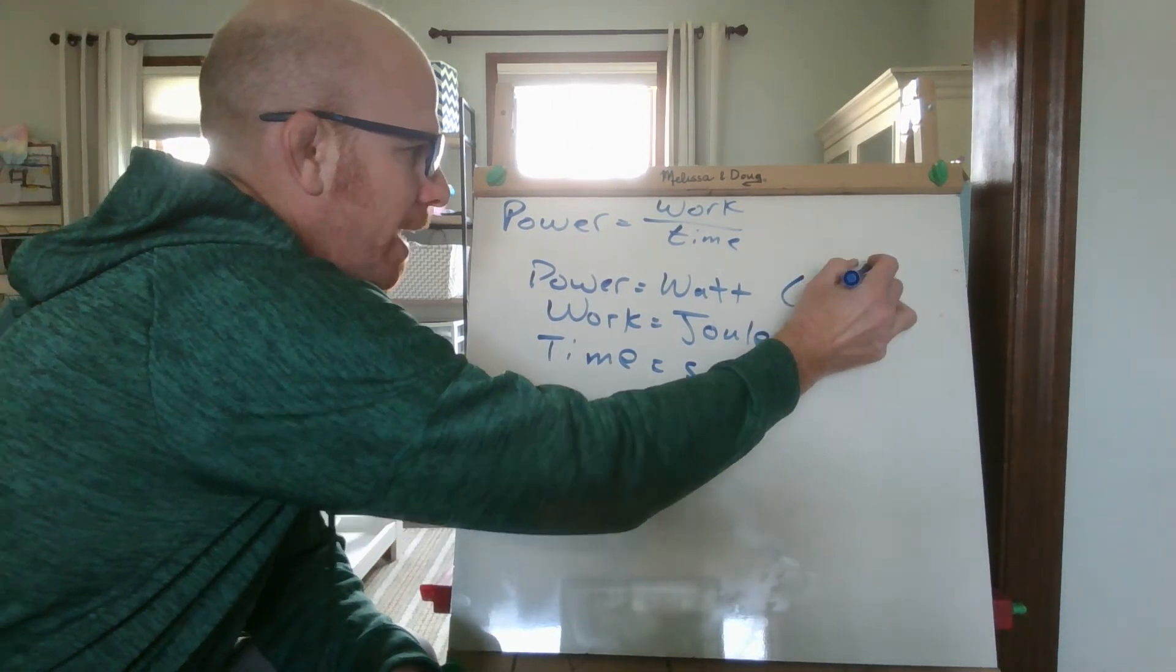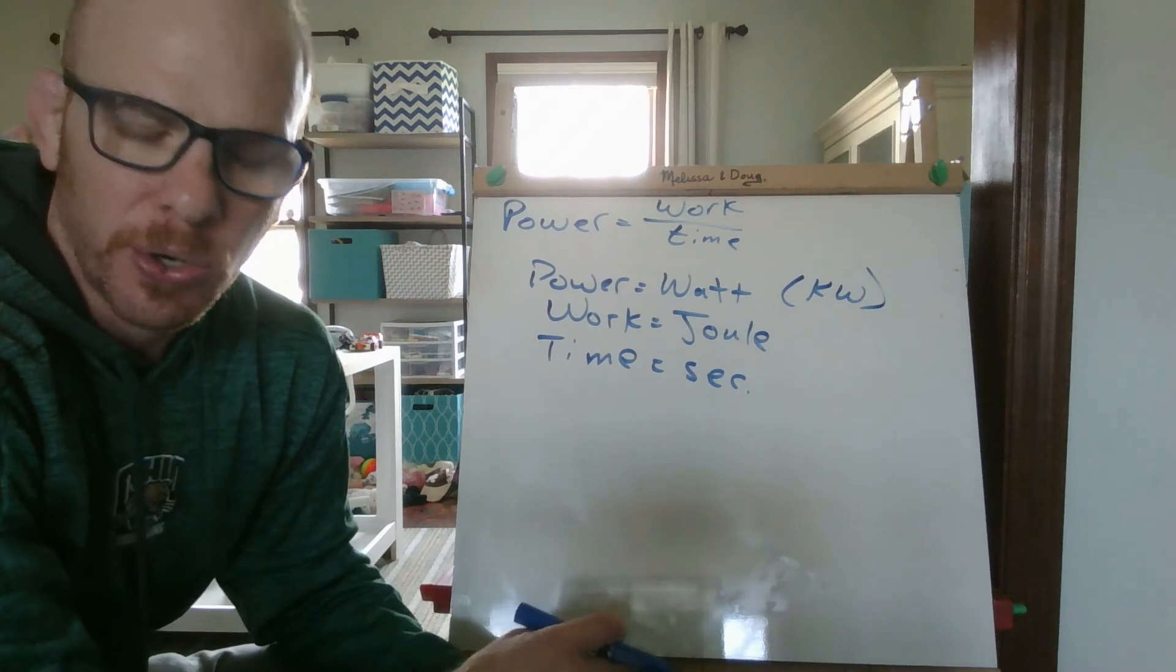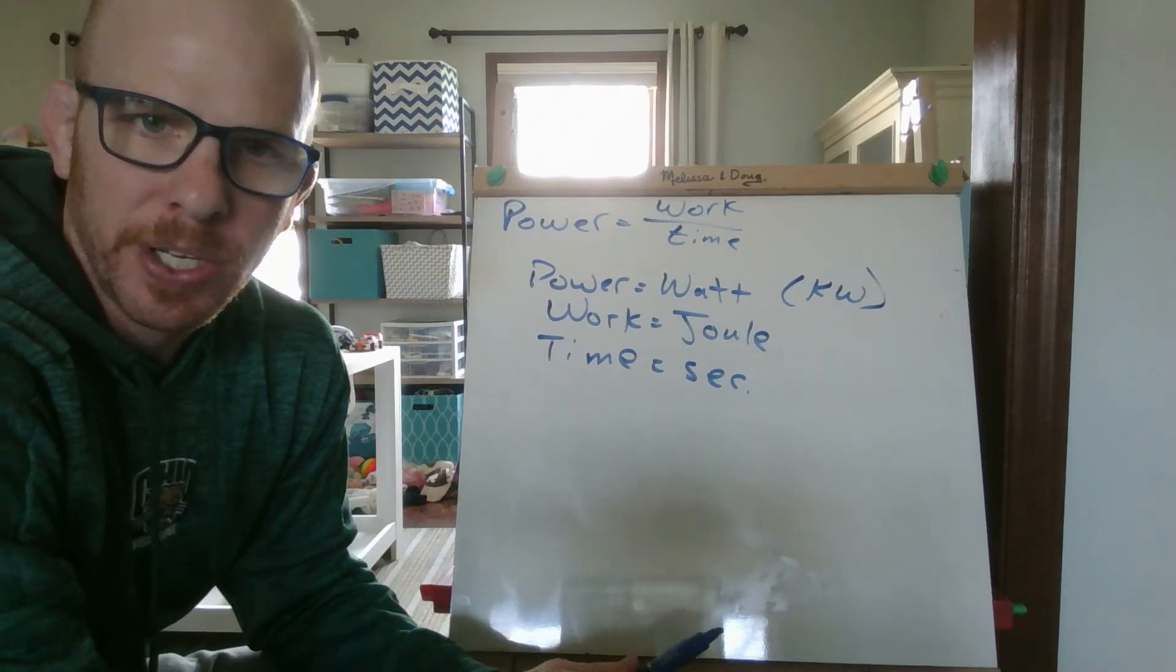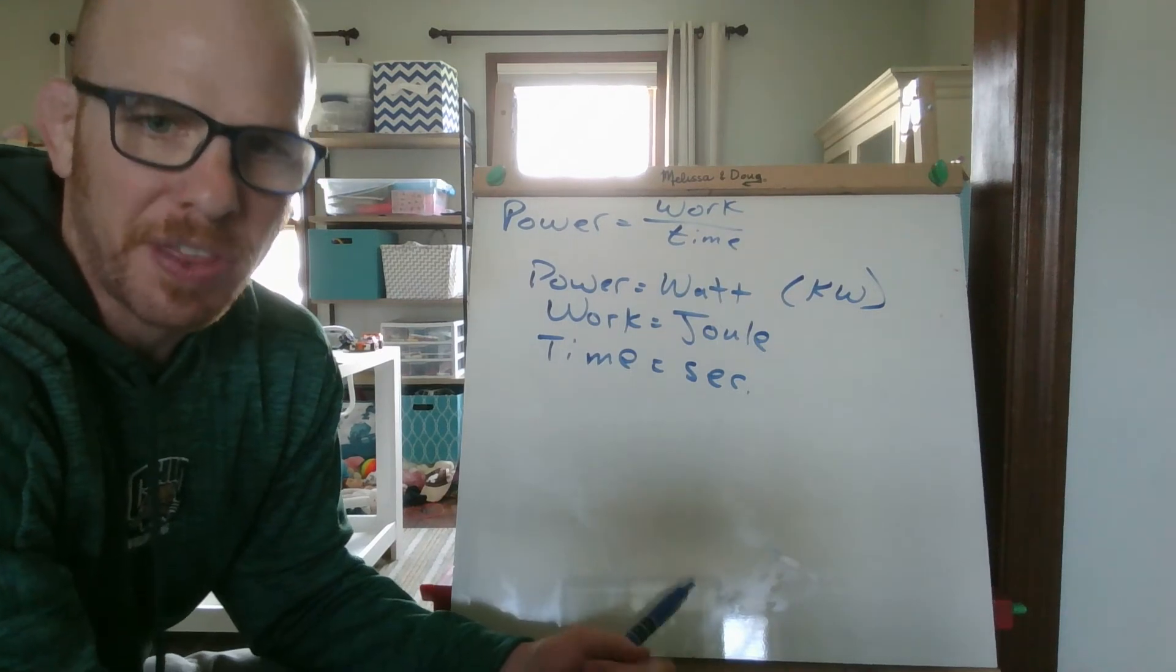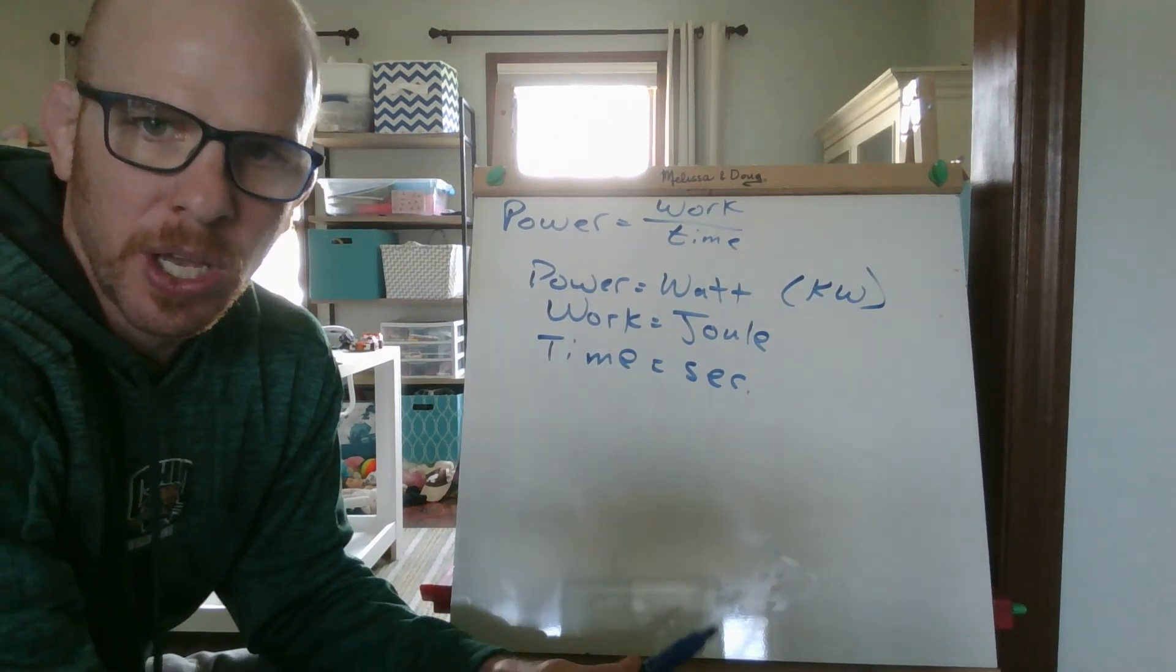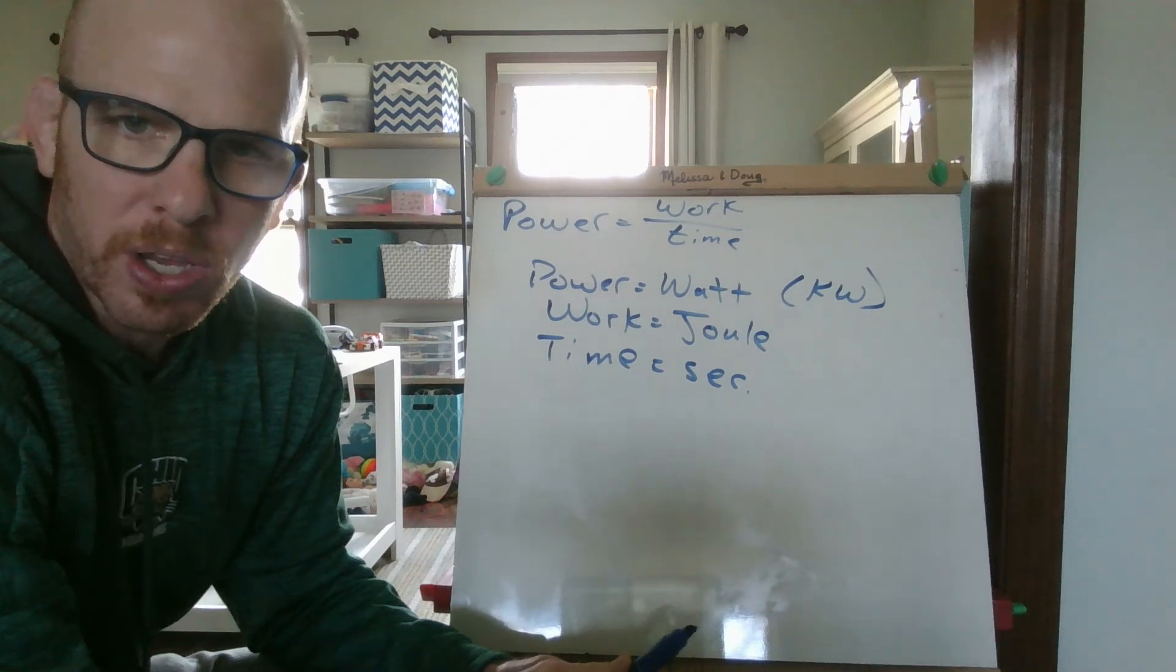We talked about how we're going to use kilowatts a lot, or you'll see that a lot because watt is such a small unit. So kilo means 1,000. So a kilowatt is 1,000 watts. Work would be joules, and time would be seconds.